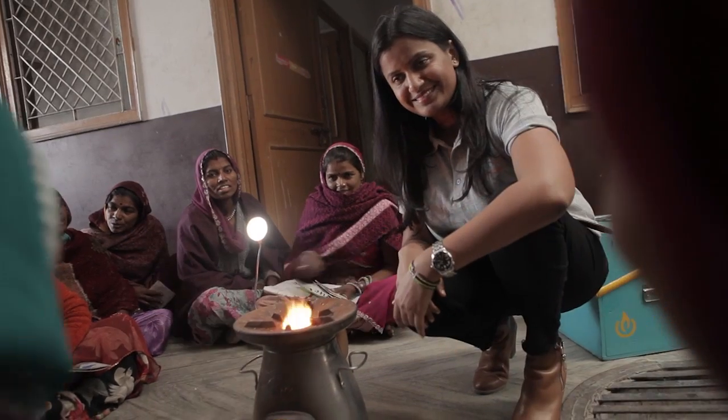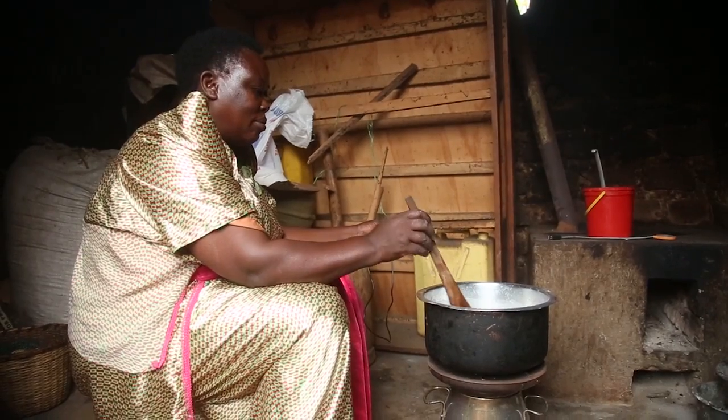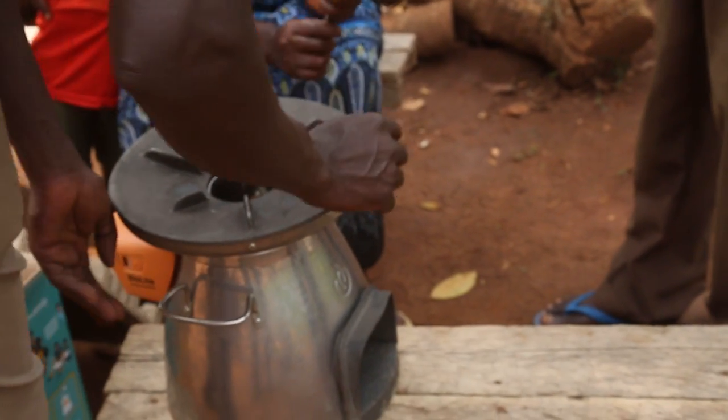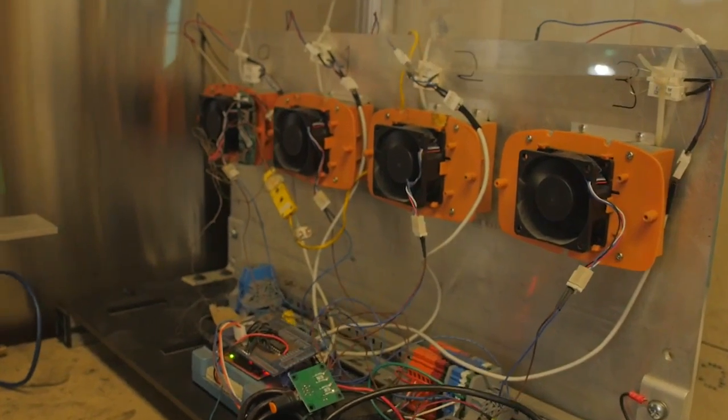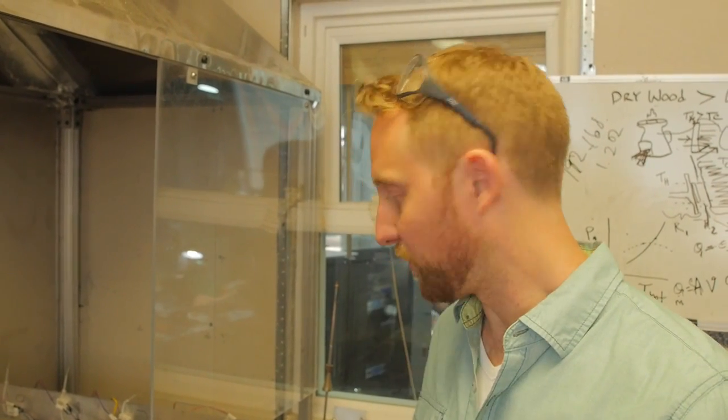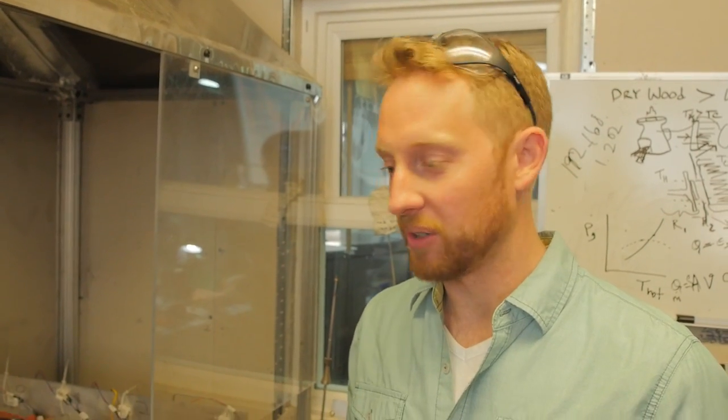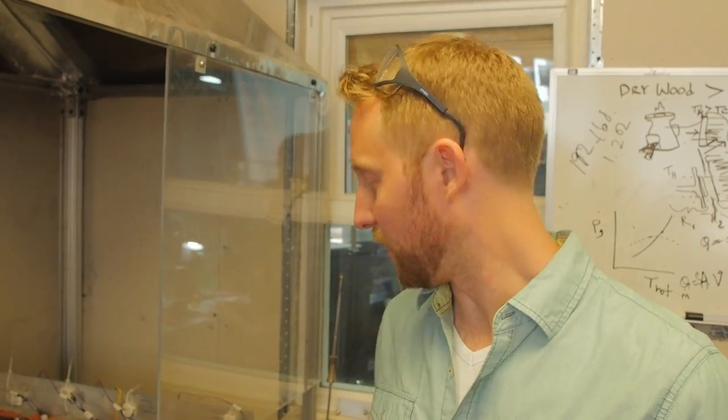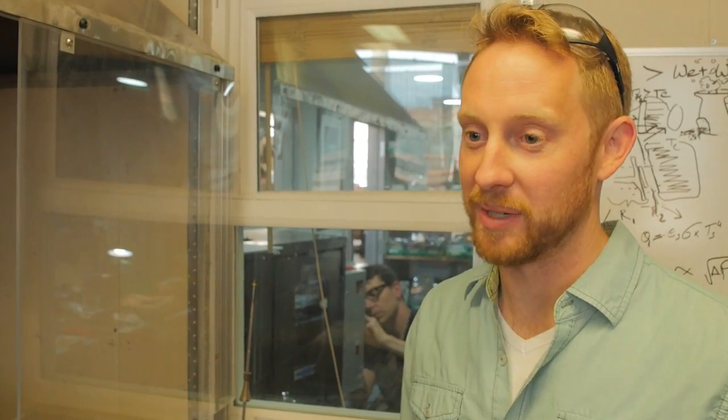We talked about the usability of the stove and the performance of the stove which are really important, but if it doesn't last it's not going to be a great product. This fixture in particular is testing for the long-term durability of the stove. When the stove is burned the temperature goes up and then comes back down and that cycling can be really damaging to the components. This fixture runs 24-7 all day long cycling through that temperature up and down and also running the electronics components through their power envelope.